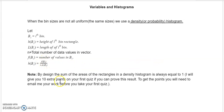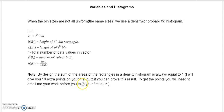Note here: by design, the sum of the areas of the rectangles in a density histogram is always equal to one. We'll demonstrate this with an example, but I'll give you ten extra credit points on your first quiz if you can prove this result. To get the points you'll need to email me your work before you take your first quiz.